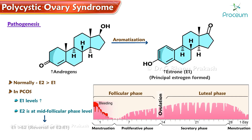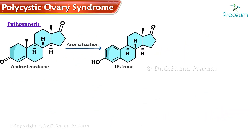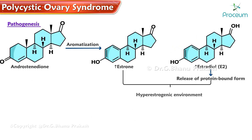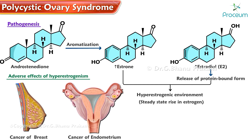In polycystic ovary syndrome, E1 is greater than E2 — that is, a reversal of the E2 to E1 ratio is seen. Excess estrone due to aromatization, and excess estradiol due to the release of protein-bound form, lead to a hyperestrogenic environment with a steady-state rise in estrogen. Hence all adverse effects of hyperestrogenism can be seen, including cancer of the breast and cancer of the endometrium.